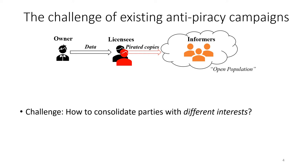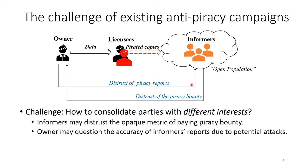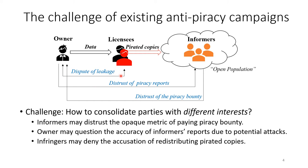However, anti-piracy campaign also faces a challenge: there are multiple parties with different interests. For example, informers may distrust the opaque metric of paying piracy bounty. The owner may question the accuracy of informers' reports due to potential attacks. For example, informers may fake their identities to submit multiple reports, or replay others' reports to the owner, making the reports inaccurate. In addition, infringers may deny the accusation of redistributing pirated copies, since the owner also has the data. And there are also some other conflicts of interest.